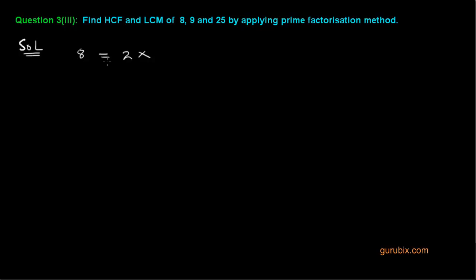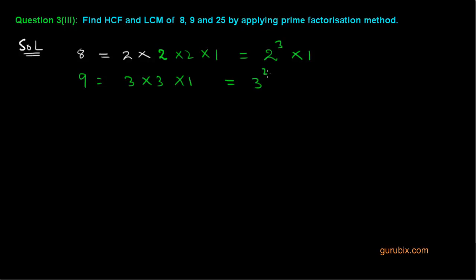We know that 8 can be written as 2 × 2 × 2 × 1, or as 2 to the power 3 × 1. 9 can be written as 3 × 3 × 1, which means 3 to the power 2 × 1. And 25 can be written as 5 × 5 × 1, or 5 to the power 2 × 1.